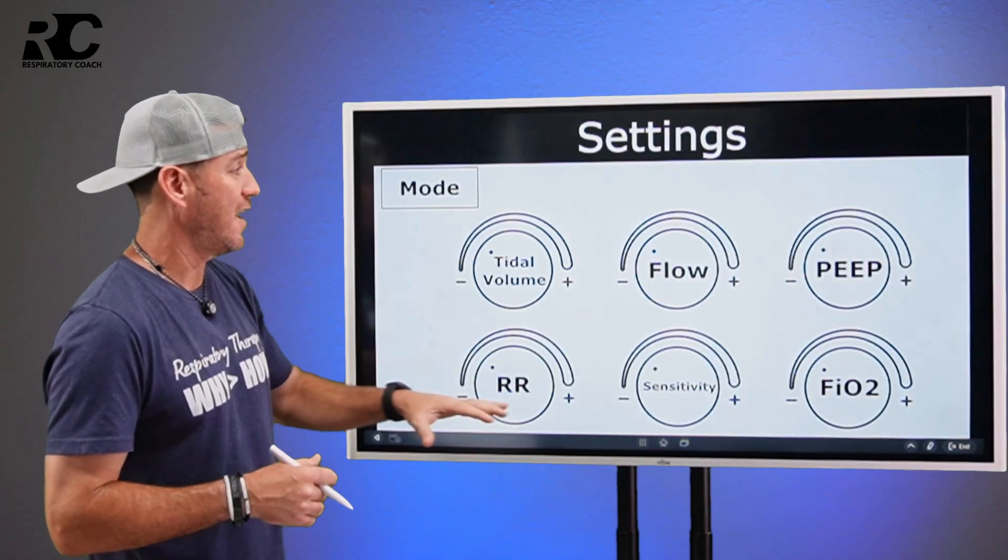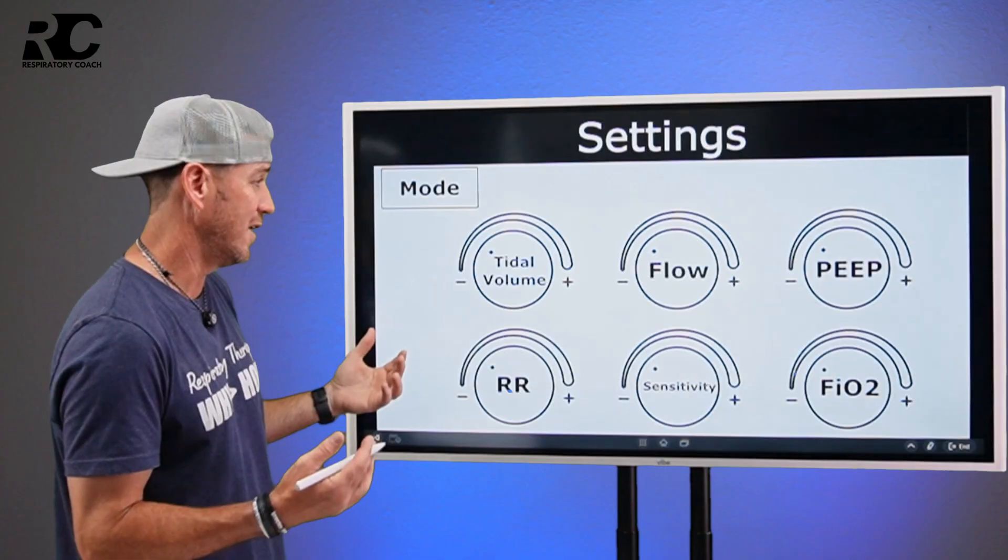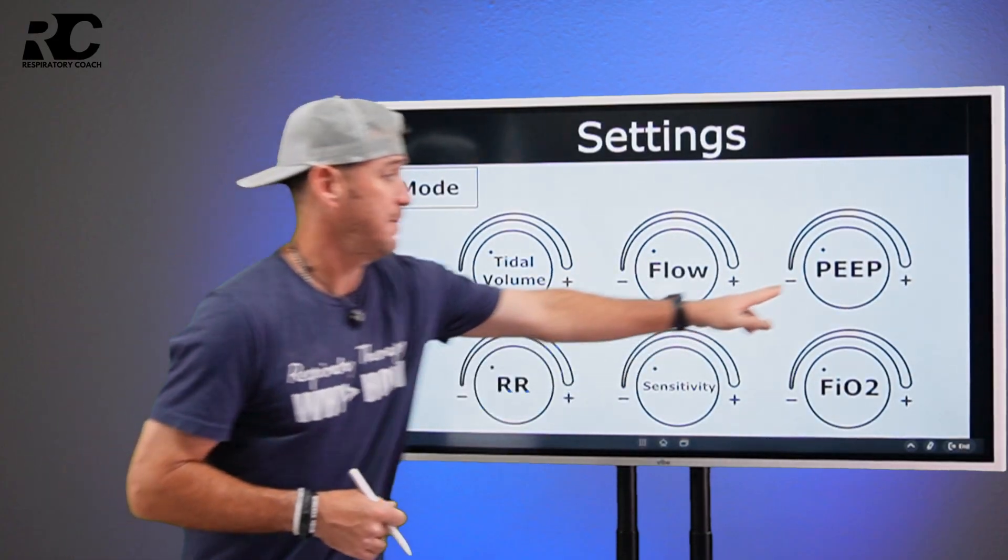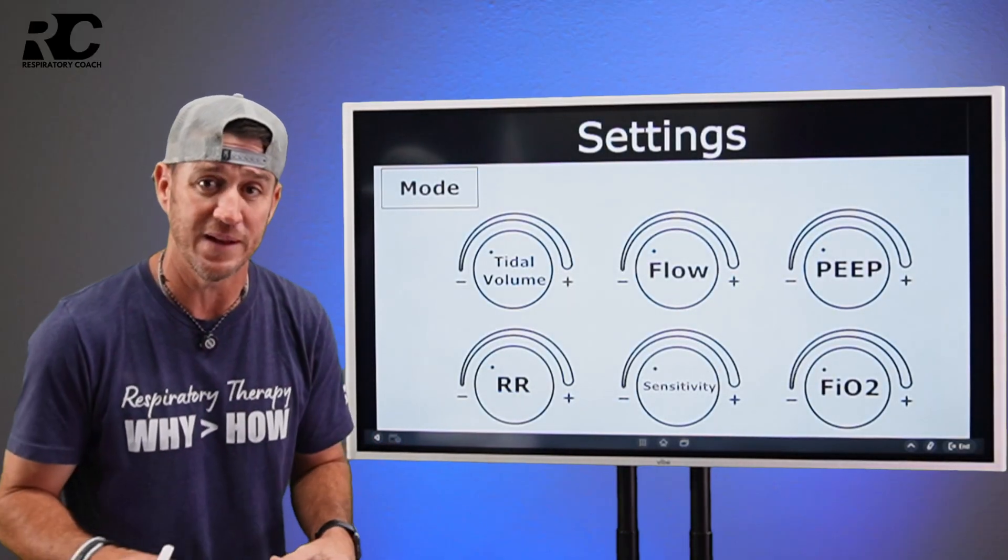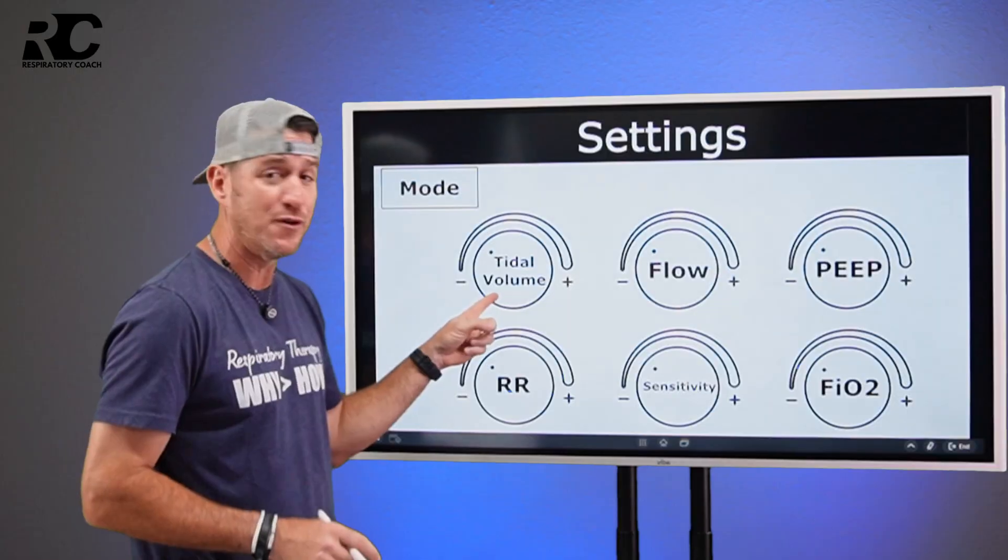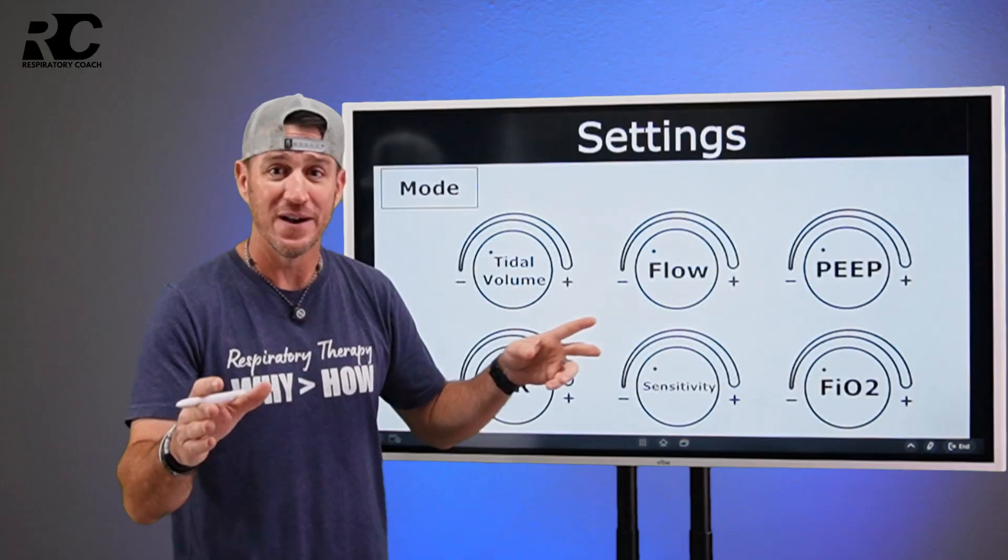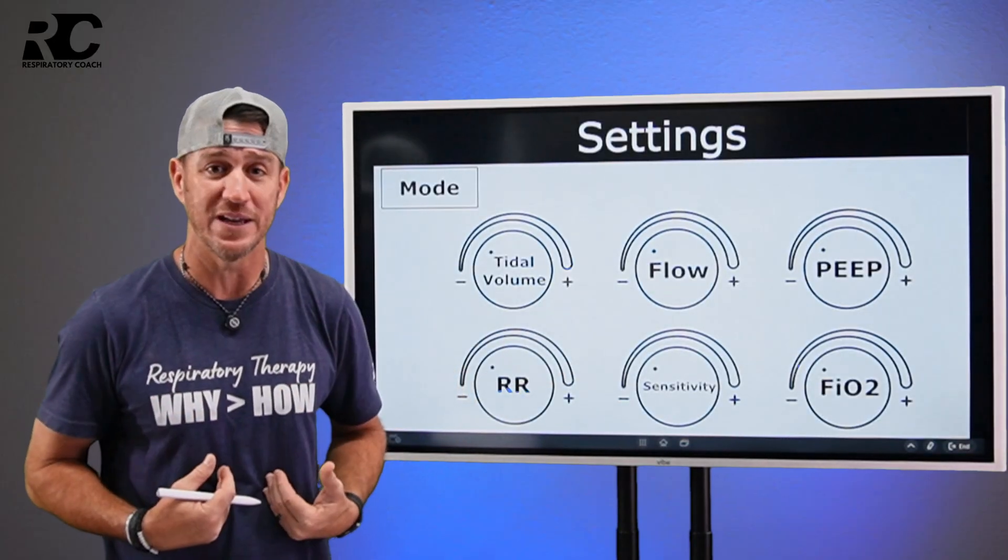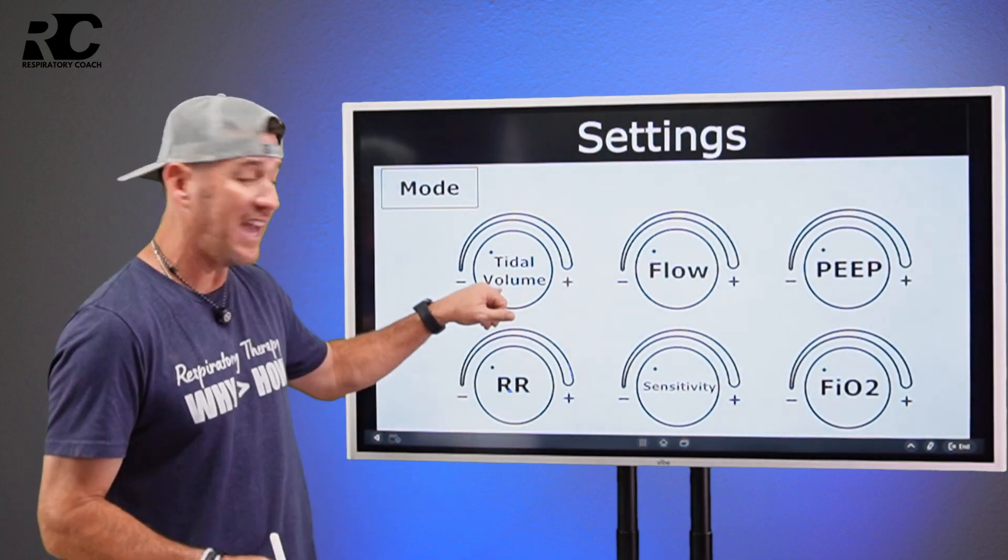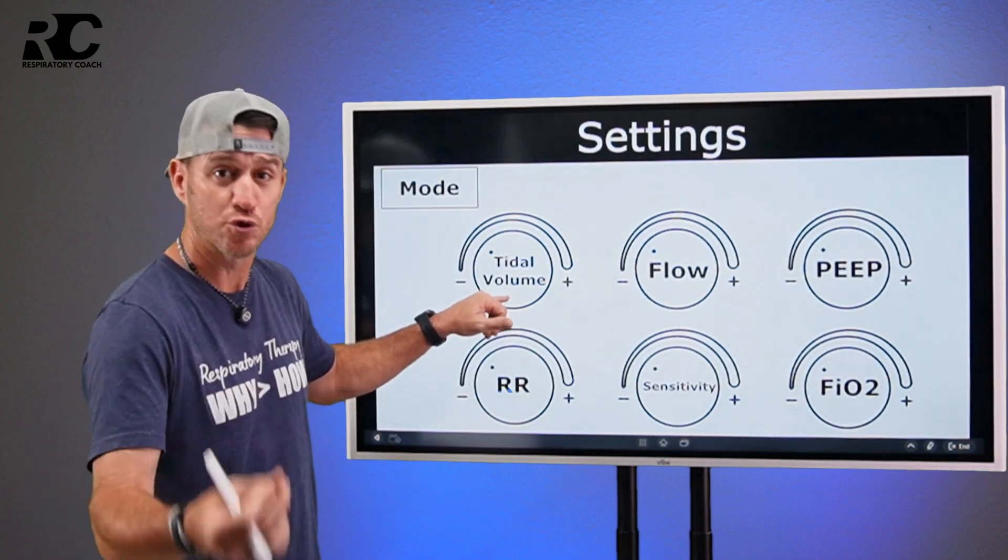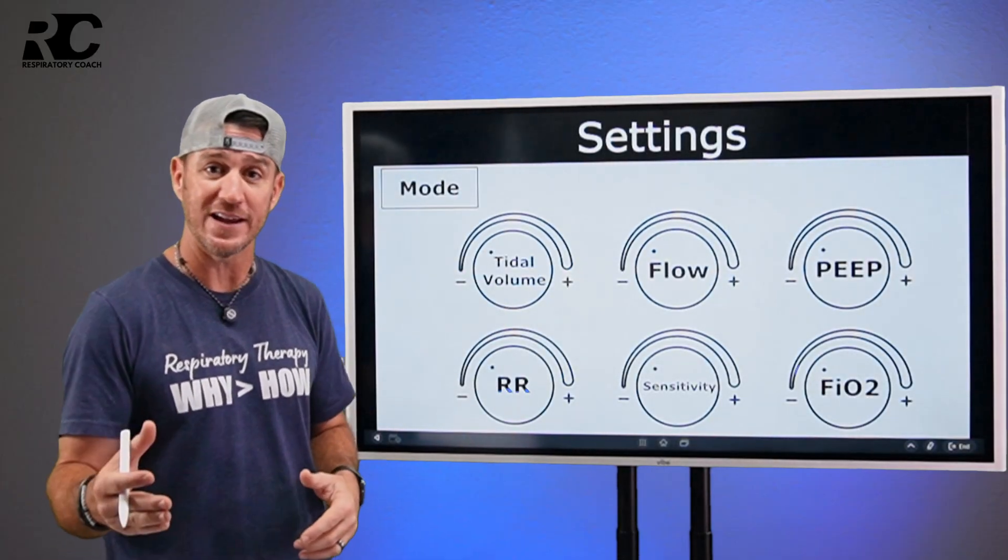You see, if I was to ask you right now, what mode are you in? You would say, well, let me see here. Let me look at my settings because I see PEEP, FiO2, sensitivity and respiratory rate. That doesn't help me. But when I come up here, I see where I have a tidal volume setting and a flow setting. Now that just told me what mode I'm in. I am in volume control. And you say, well, how do you know that? Because I have a setting that allows me to control the volume. And that's exactly what this mode will look like. Okay.